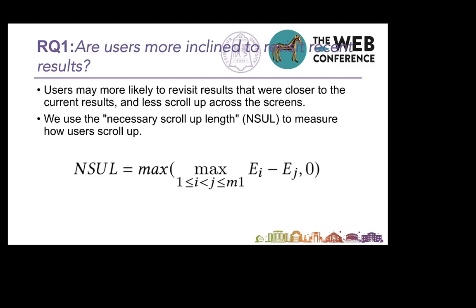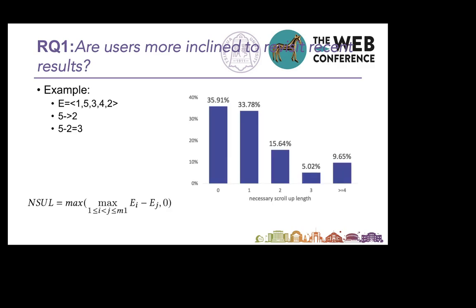For the first question, we suggested that users may be more likely to revisit results closer to the current result and less scroll-up across the screen. We used the Necessary Scroll-Up Lines, NSUL for short, to measure how users scroll up. In the formula, we can find that if the user examines results in order, the NSUL will be 0; otherwise, it will be greater than 0. Compared to revisit distance, NSUL can describe the user's scroll-up behavior more accurately.